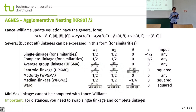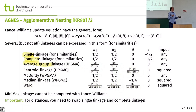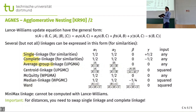Single and complete linkage make a lot of sense for cosine similarity. Average linkage — average similarity — is very intuitive to interpret. So these are good choices for pretty much any data. Ward linkage is particularly interesting for text data.